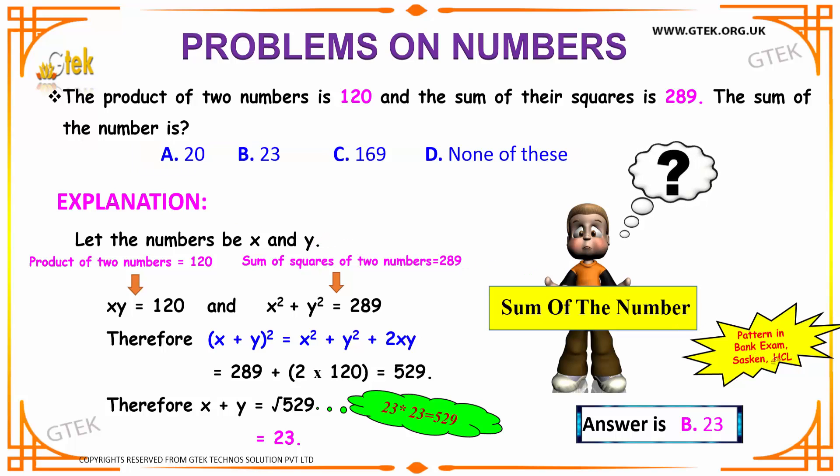Well, this is an important question as you can see it has appeared in Bank Exams, Saskan, and HCL. It is given that the product of two numbers to be 120. So if you are considering your numbers to be X and Y, so the product of the number is nothing but XY, that is equal to 120. And it is given that the sum of the squares is 289. So sum of the squares is nothing but X square plus Y square is nothing but 289.